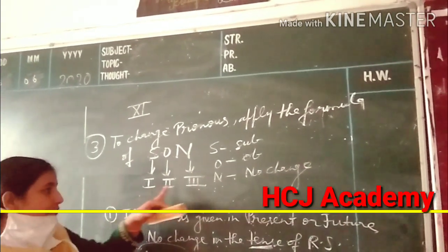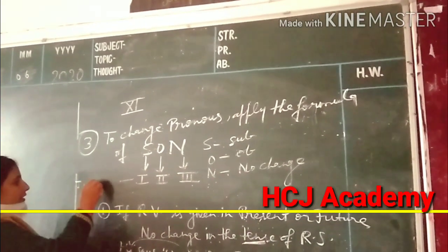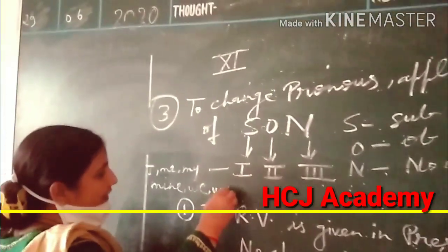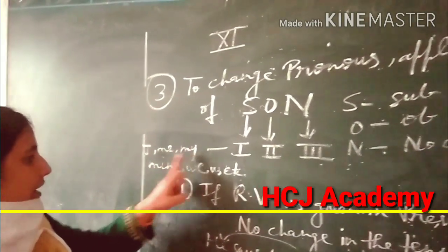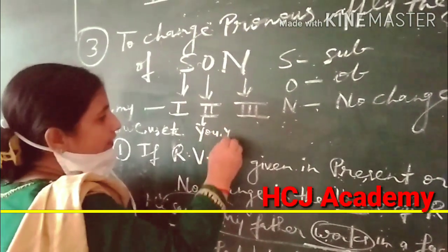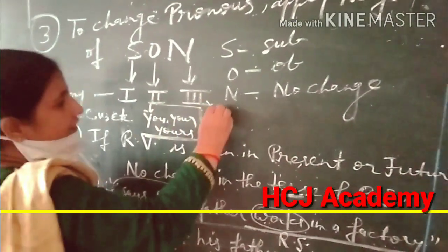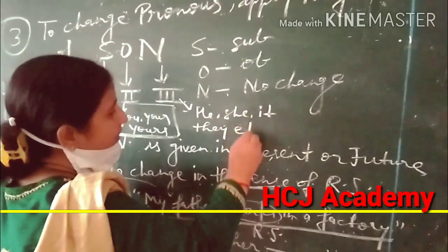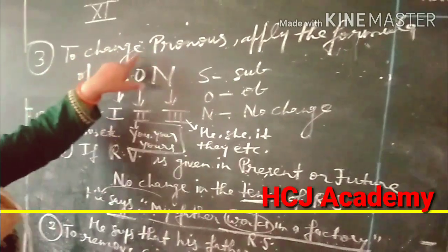First person means: I, me, my, mine, we, us, etc. Second person means: you, your, and yours. Third person means: he, she, it, they, etc. It is clear because changing pronouns is the most important rule. Here 'my' is the pronoun that was changed.